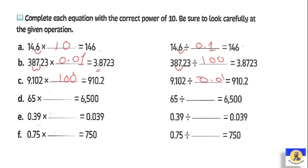65 by what equals 6500? That's two zeros — multiply by 100. 65 divided by what equals 6500? It will be 0.01. Because divided by 0.01 means multiply by 100. 0.39 by what equals 0.039? Move back one digit — multiply by 0.1. 0.75 by what equals 750? Move three digits, so it will be 1000.